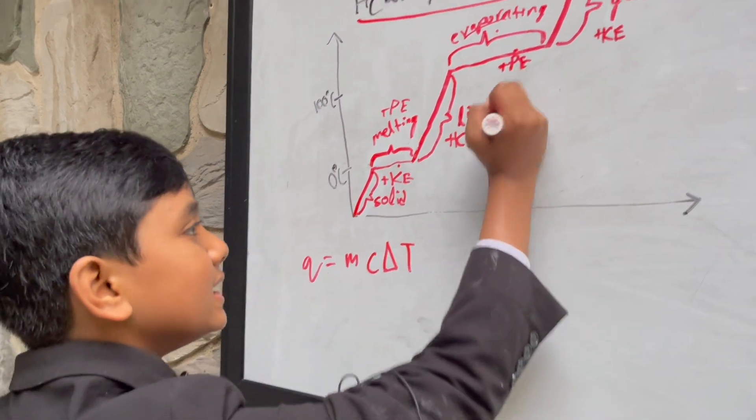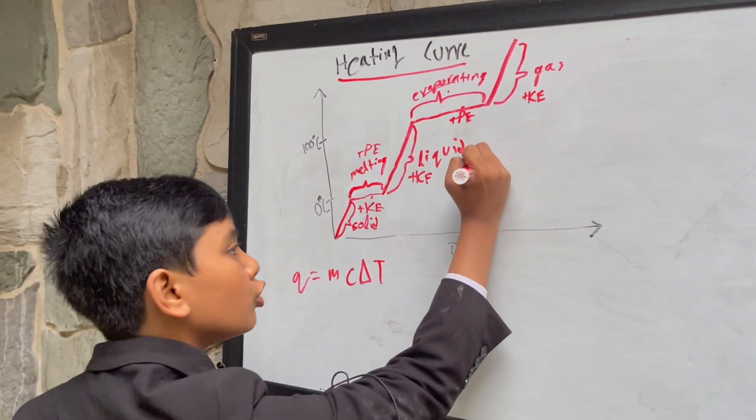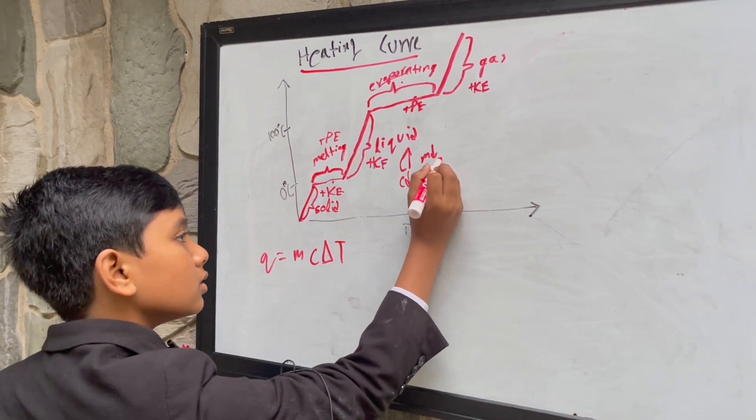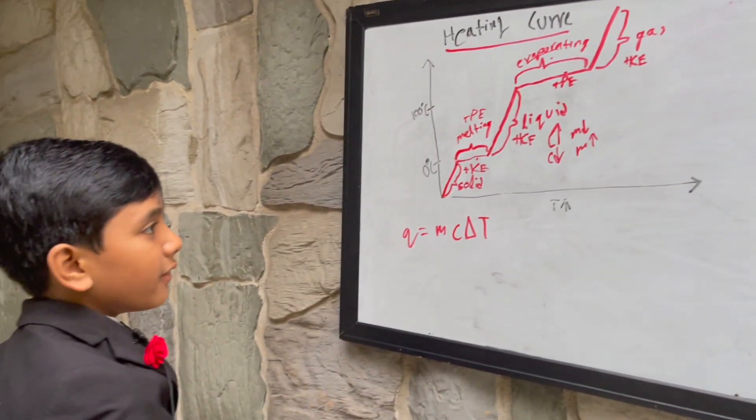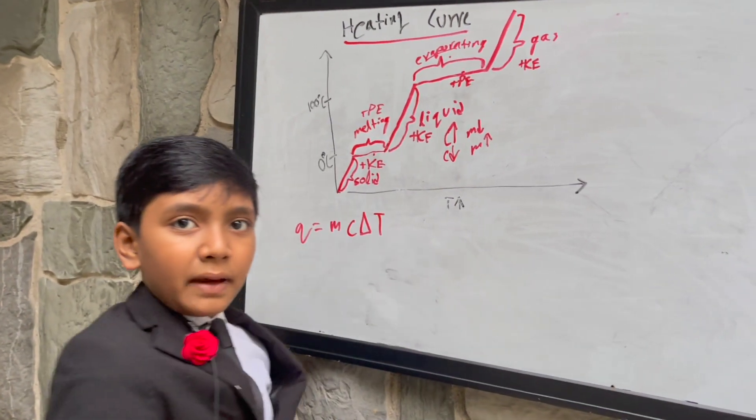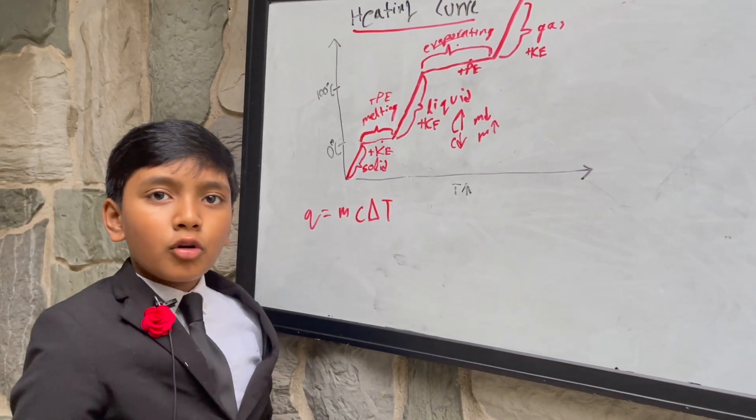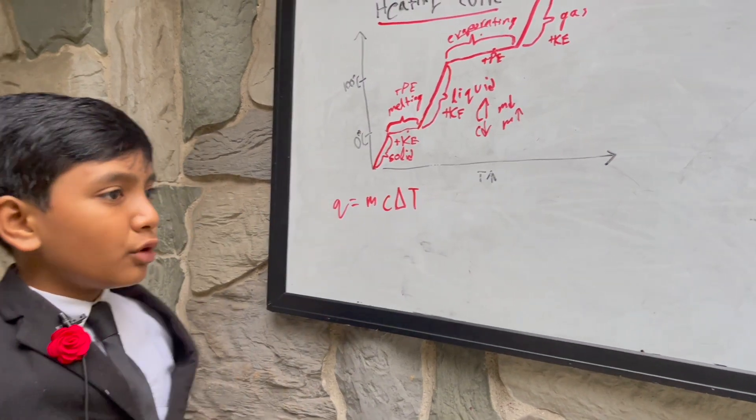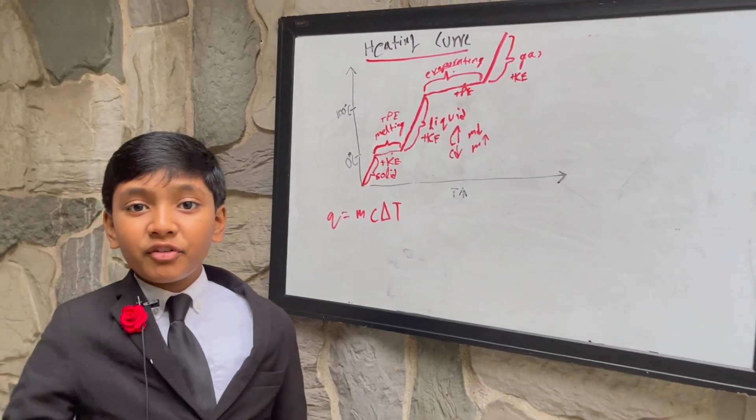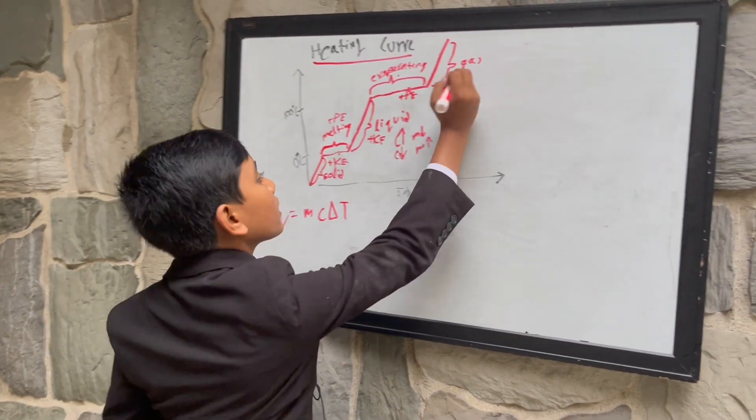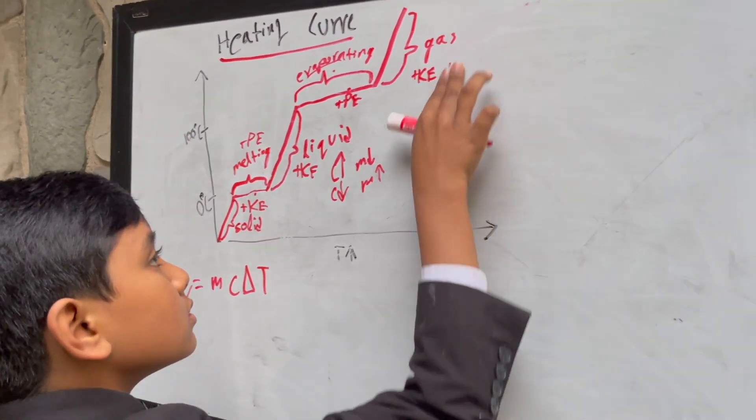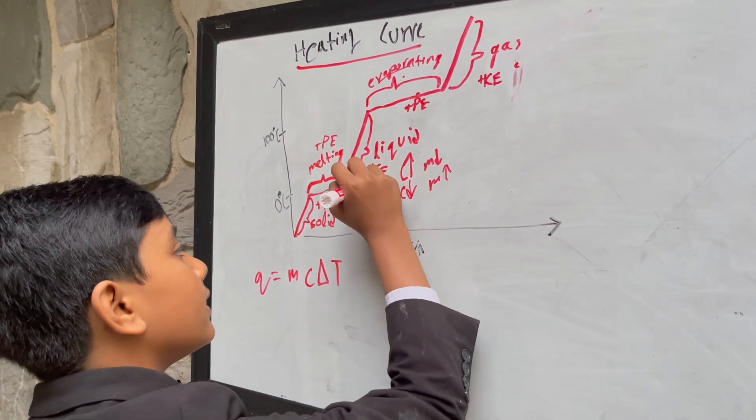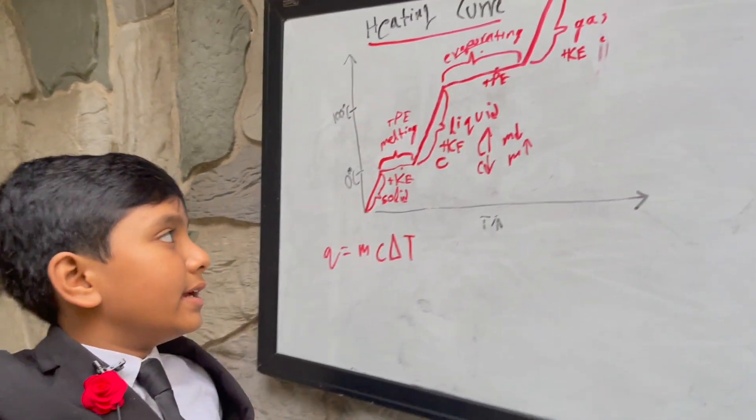When C goes up, slope goes down and vice versa. So, that means that if it has a lot of heat capacity, it will be very hard to heat it up by one degree Celsius. While if it has only a little heat capacity, it will be very easy. So, for example, gas has a very little heat capacity. But, liquid has a larger heat capacity. But, that's it for today.